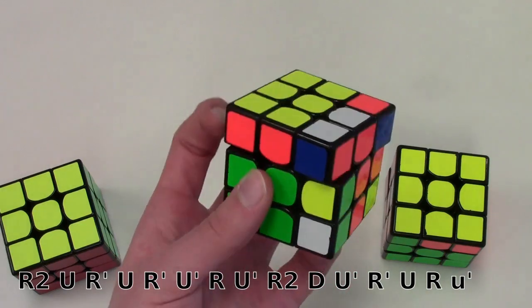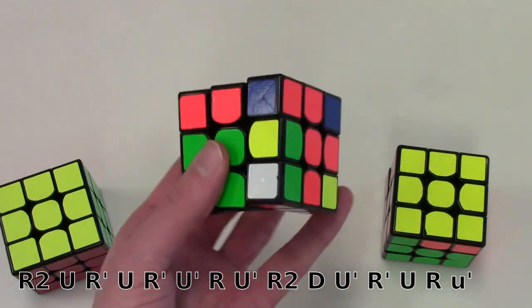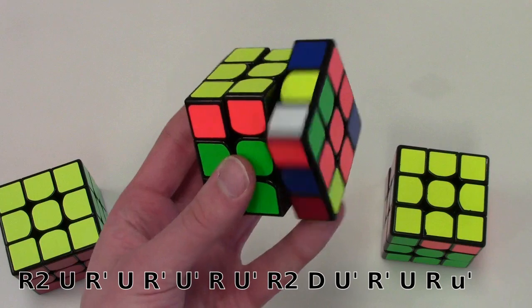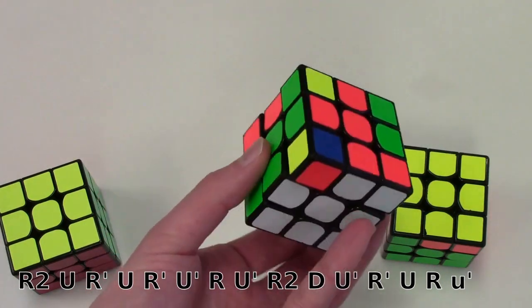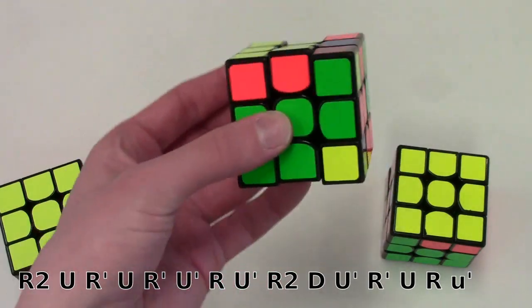Now I can do R U'. Now I have to do another R2, which I will do doing two flicks. Now I have to do U' D, and this move I can actually do both of them at the same time.